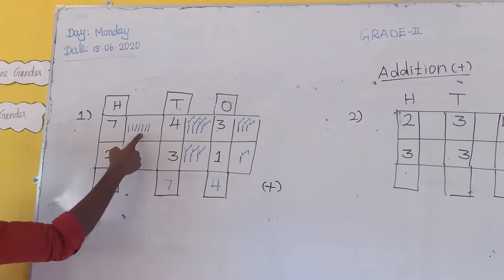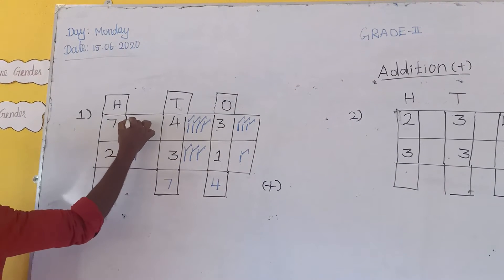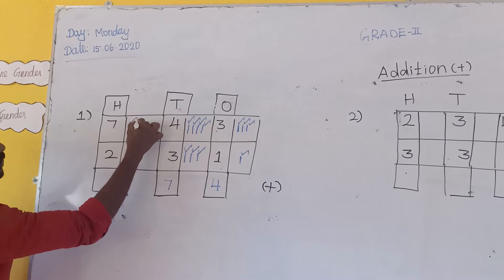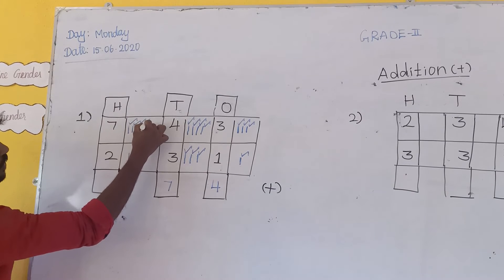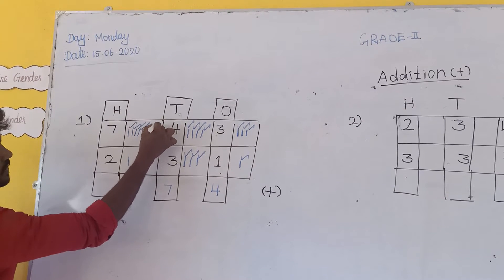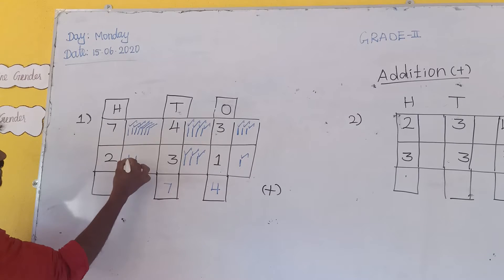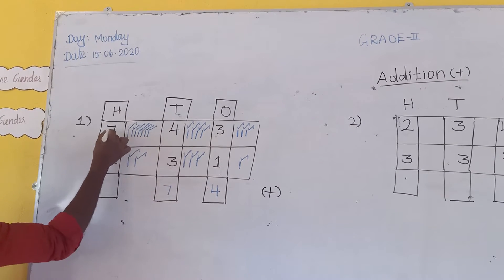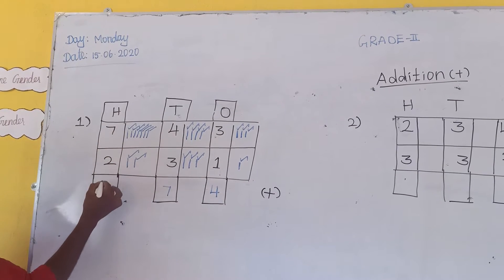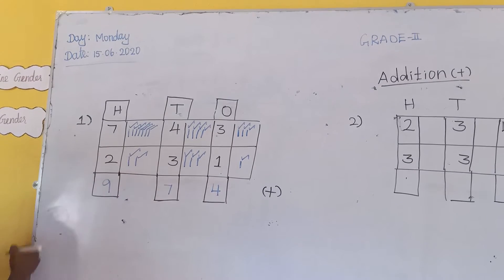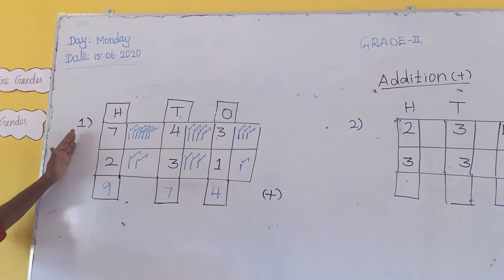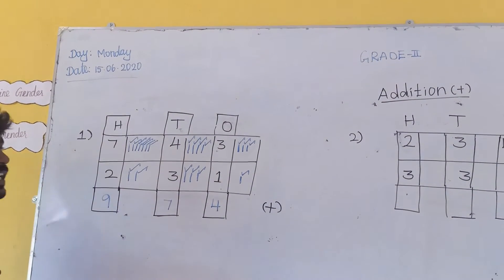Now add these lines: 1, 2, 3, 4, 5, 6, 7, 8, 9. So 7 plus 2 is equal to 9. First sum is ready.